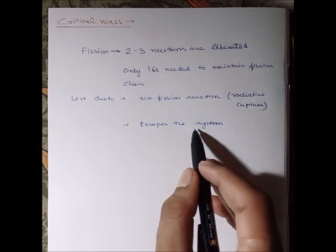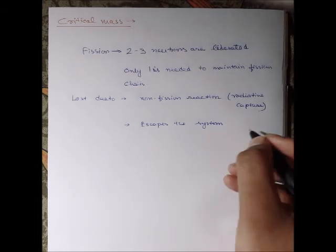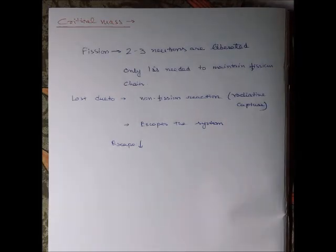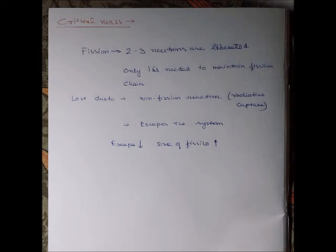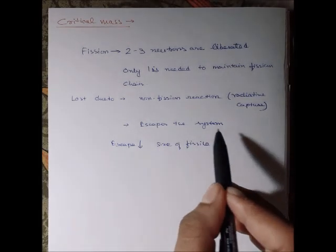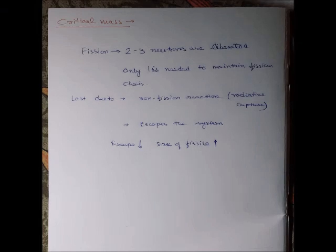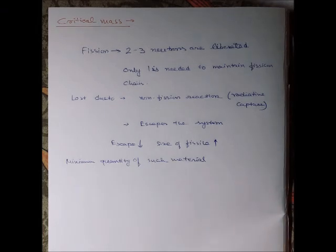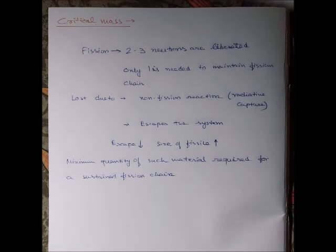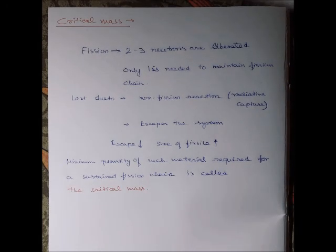This can be reduced by increasing the size of the fissile material, therefore escape goes down. The minimum quantity of such material that is capable of sustaining a fission chain is called critical mass.